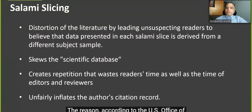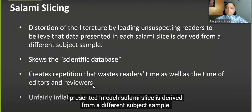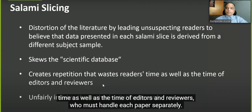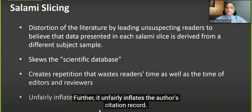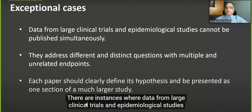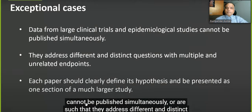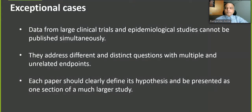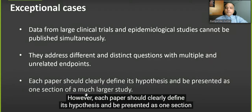As a general rule, as long as the slices of a broken-up study share the same hypotheses, population, and methods, this is not acceptable practice — the same slice should never be published more than once. According to the U.S. Office of Research Integrity, salami slicing can result in a distortion of the literature by leading readers to believe that data in each slice is derived from a different subject sample, skewing the scientific database and creating repetition that wastes readers', editors', and reviewers' time, while unfairly inflating the author's citation record.